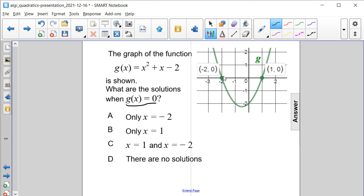And it's crossing the x-axis at the point negative 2, 0 and the point 1, 0. Well, these mean that our x values are negative 2 and x is equal to 1.